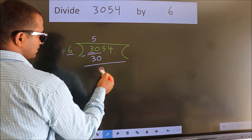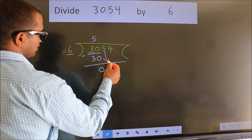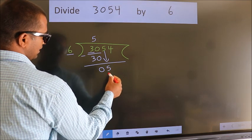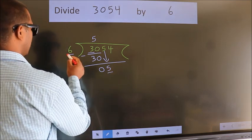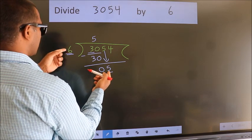After this, bring down the beside number. So, 5 down. Here we have 5, here 6. 5 smaller than 6.